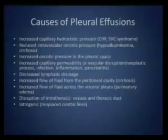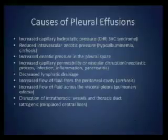Cirrhotics always develop a right pleural effusion - it's a given. The reason is that you have too much fluid in the peritoneal cavity, and the peritoneal cavity is not really separated from the pleural cavity. You have lymphatics along the diaphragm that absorb that fluid, but they become overwhelmed and it goes right up into the chest. You can have increased flow of fluid from the lung into the pleural cavity, particularly with pulmonary edema, or with traumatic disruption of vessels or the thoracic duct. And of course there's an iatrogenic cause - misplaced central lines. Please don't forget that.